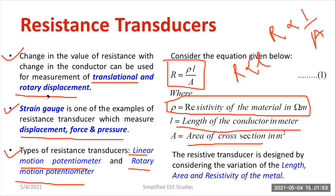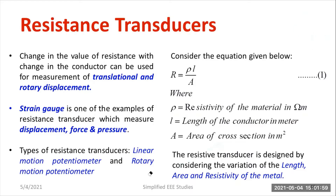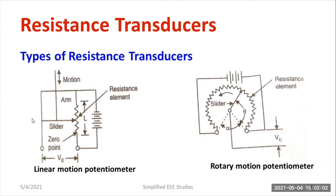Now let us explain the differences between a linear motion potentiometer and a rotary motion potentiometer. In a linear motion potentiometer, our intention is to measure non-electrical quantities such as displacement, distance, or velocity. The moving object is directly connected to a slider, as you can clearly observe. This is the moving object connected to the slider, and we are going to measure linear displacement or linear velocity.